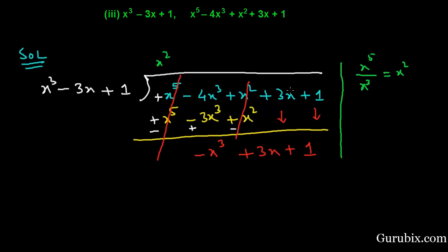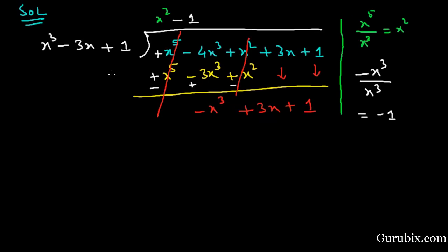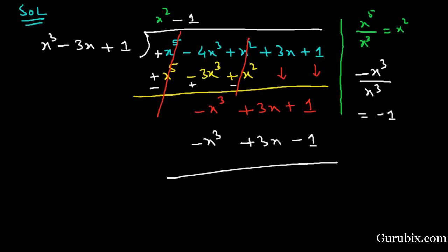Now we find the next term in the quotient by dividing minus x cubed by x cubed, giving minus 1. So the next term in the quotient is minus 1. We multiply all the terms of the divisor by minus 1, giving minus x cubed plus 3x minus 1. We change the signs — plus, minus, plus — and this term is cancelled, this term is cancelled, but here we have positive 2.